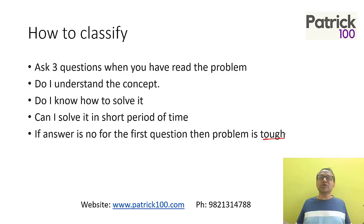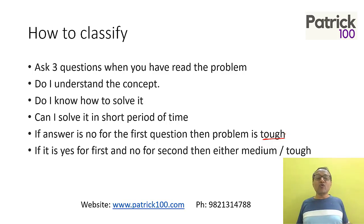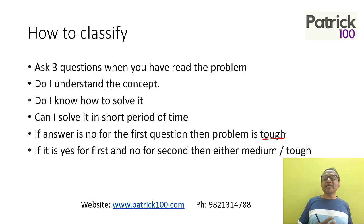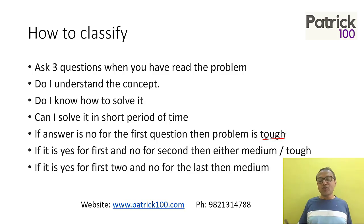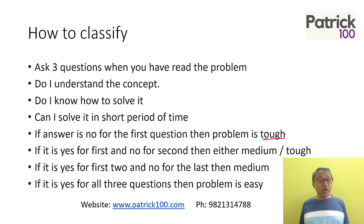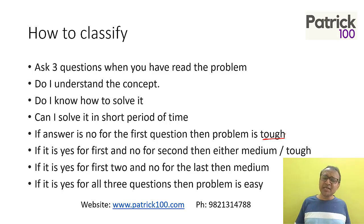If you don't know the concept at all — for example, cubic equations — obviously it's tough, you can leave the question directly. If yes for the first but no for the second — you know the concept of time and distance but don't know how to solve it and it looks very complicated — classify it as tough. But if you feel that with some time you might be able to solve it, keep it as medium. If yes for the first two but it will take a longer period of time to solve, put it as medium. And if yes for all three — you know the concept, you know how to solve it, and you can solve it quickly — it becomes an easy question. This is how you classify questions by asking these three questions, and if you classify well, you should do well in the exam.